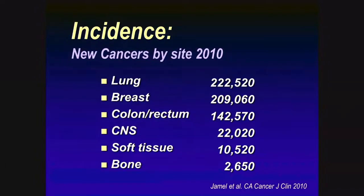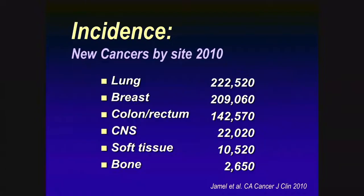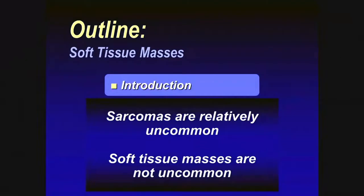When we look at the overall incidence of cancer in the United States, true soft tissue malignancies really pale in numbers compared to lung, breast, or colorectal carcinoma. But when you consider that there are estimated to be at least a hundred benign lesions presenting as a soft tissue mass for every one malignancy, it becomes something we see on MR imaging not infrequently. Although true sarcomas are relatively uncommon, soft tissue masses certainly are not, and as radiologists we must be able to evaluate these effectively.